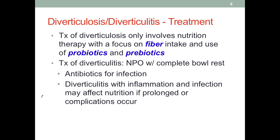If we are dealing with diverticulitis — the inflammation — it will obviously be more severe. With the inflammation, we would order NPO, which will allow for complete bowel rest. If there is infection, we would call for the use of antibiotics. In the presence of inflammation and infection, this can affect nutrition, especially if it lasts a long time, meaning stress factors persist and energy and nutrient requirements will increase accordingly.